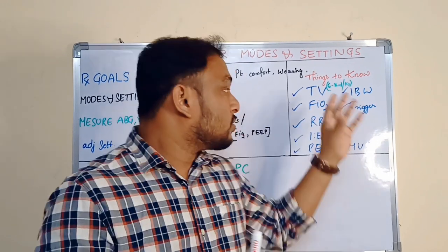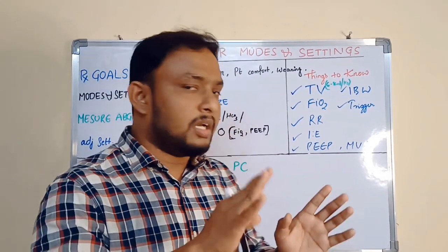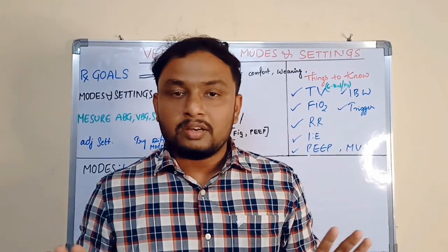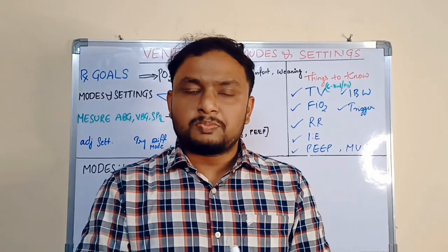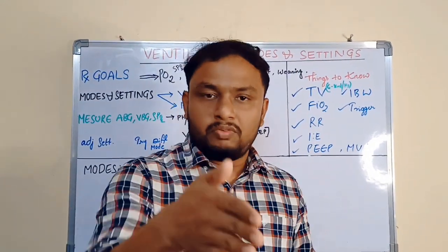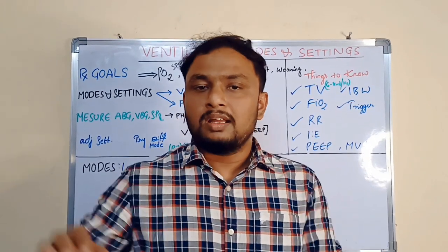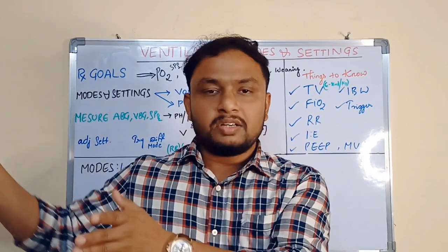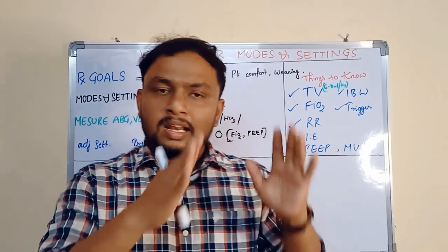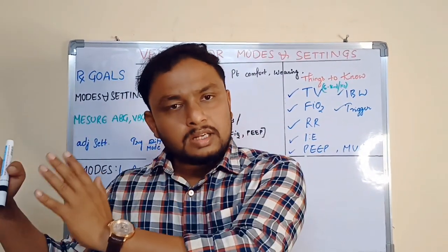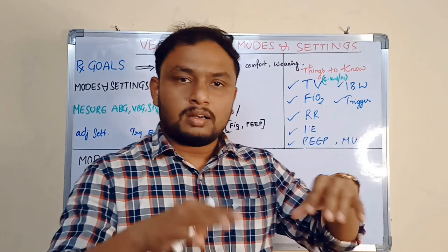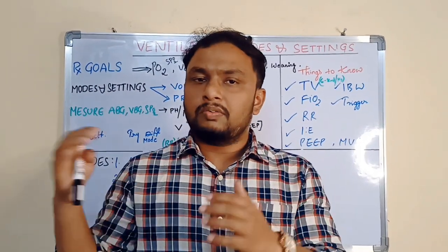On the ventilator screen, tidal volume, FiO2, PEEP, respiratory rate, triggers — all these things will be displayed. Don't get confused. It will be displayed in two ways: on one side there will be ventilator values which you are giving — for example, you will set a tidal volume of 450 — and on another side you will see patient values, how much the patient is generating or how much the ventilator is giving. Like ventilator machine values on one side and patient values on the other side — or top and bottom, or in a graphical way. There are different types based on the operating system of the ventilator.